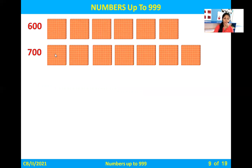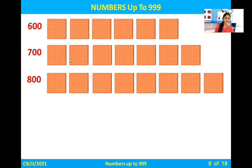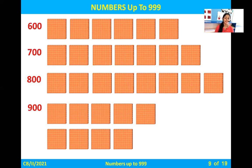Next, count the hundreds blocks: one hundred, two hundred, three hundred, four hundred, five hundred, six hundred, seven hundred — so the number is seven hundred. Then: one hundred, two hundred, three hundred, four hundred, five hundred, six hundred, seven hundred, eight hundred. And the last: one hundred through nine hundred — nine hundreds blocks means the number is nine hundred.